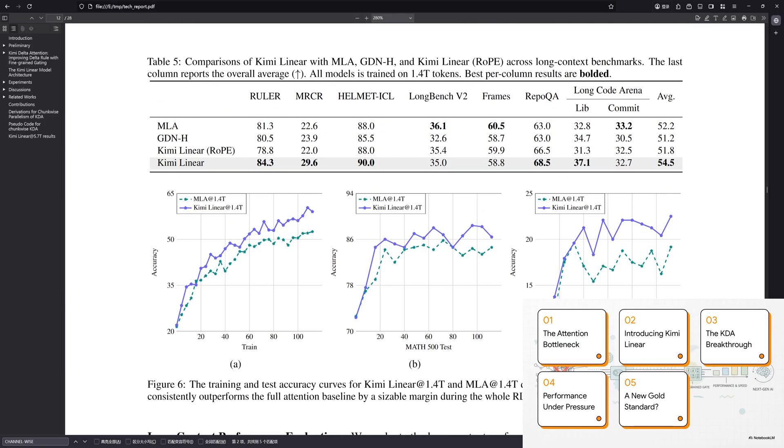Then, we'll meet the solution, Kimi Linear, and get into its secret sauce, something called KDA. After that, we'll look at the cold, hard data. Does it actually work? And finally, we'll ask the big question. What does this all mean for the future of AI?